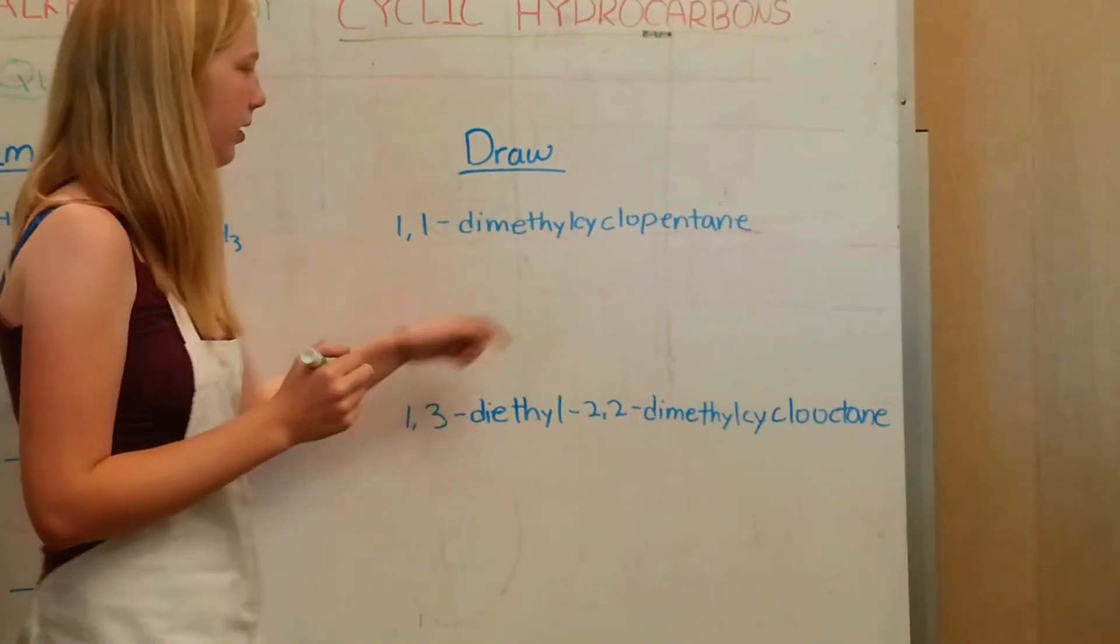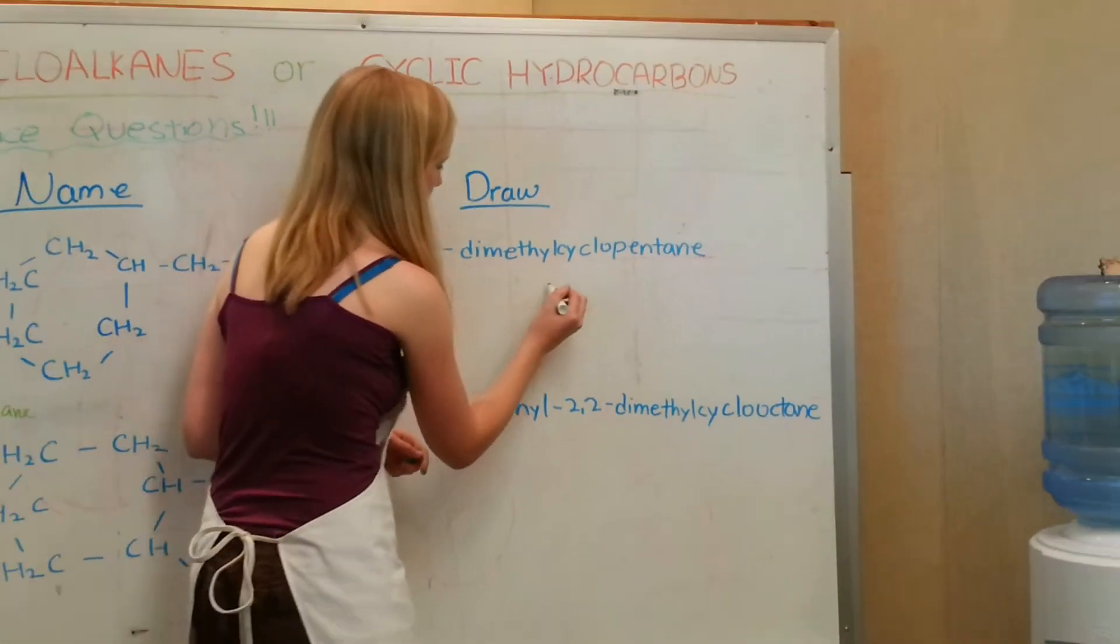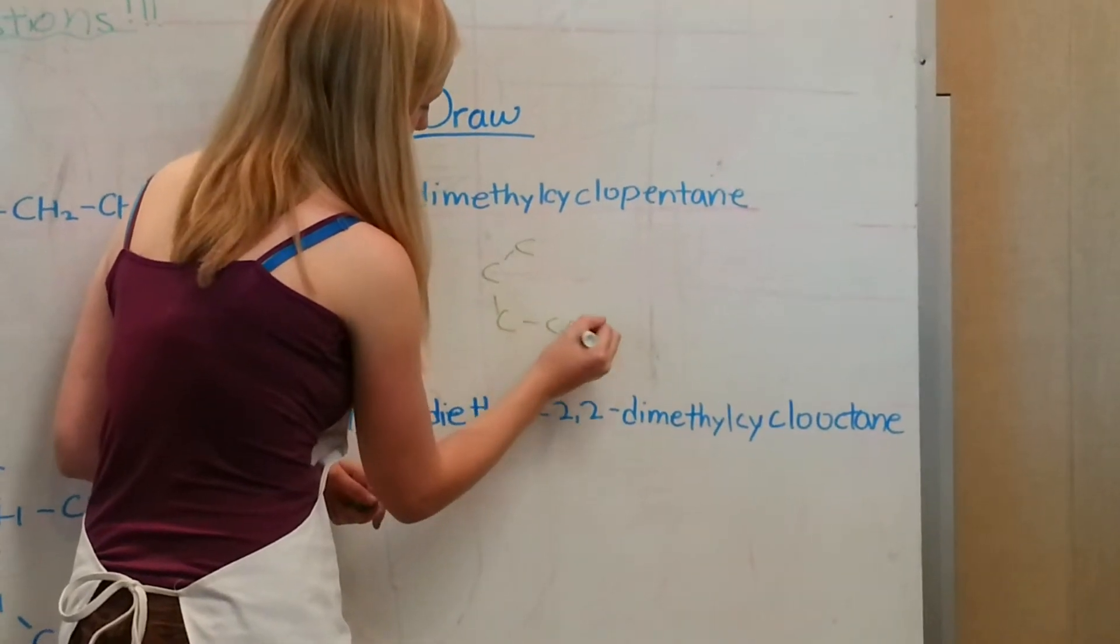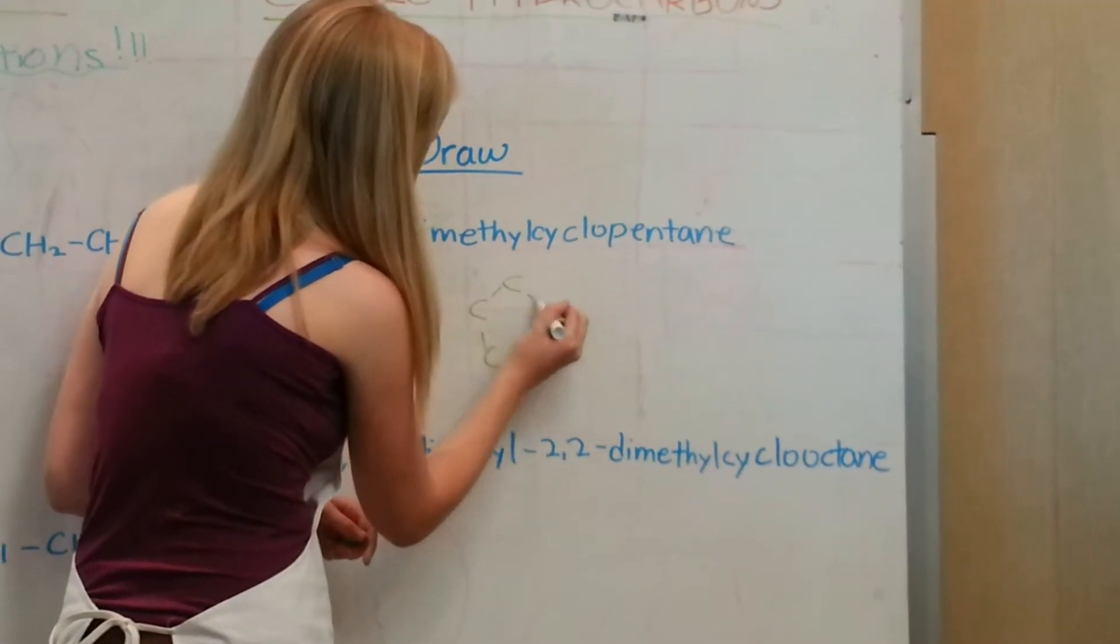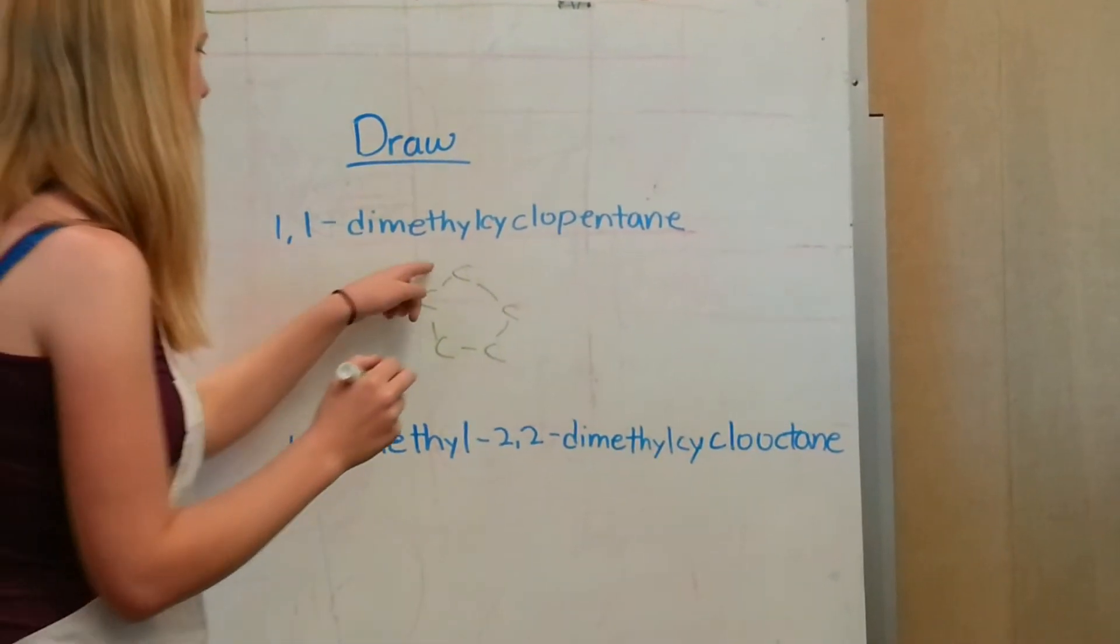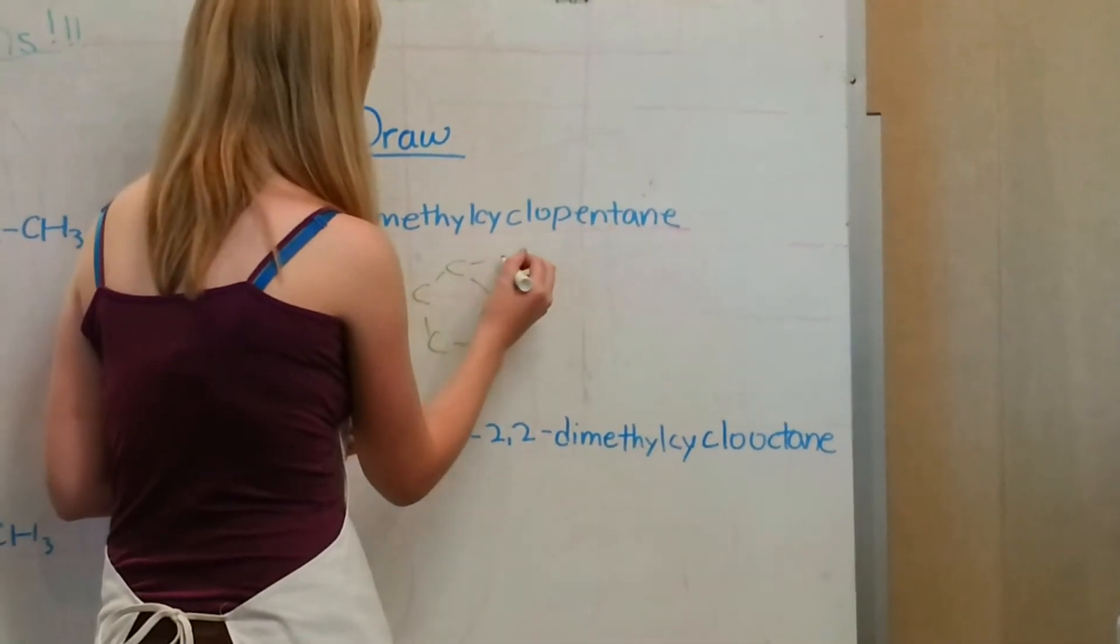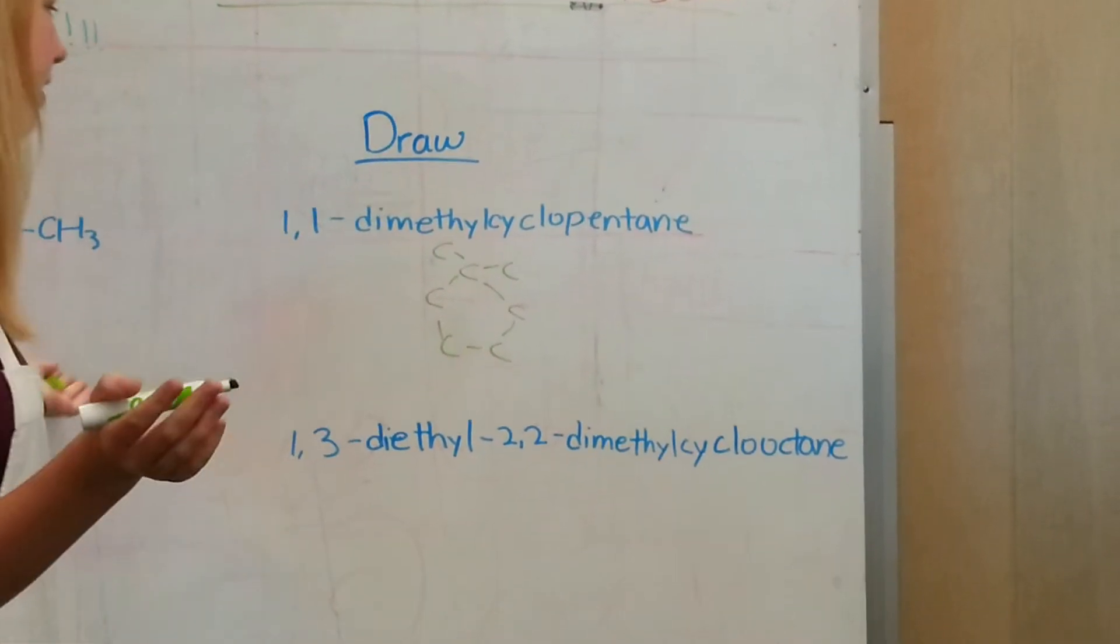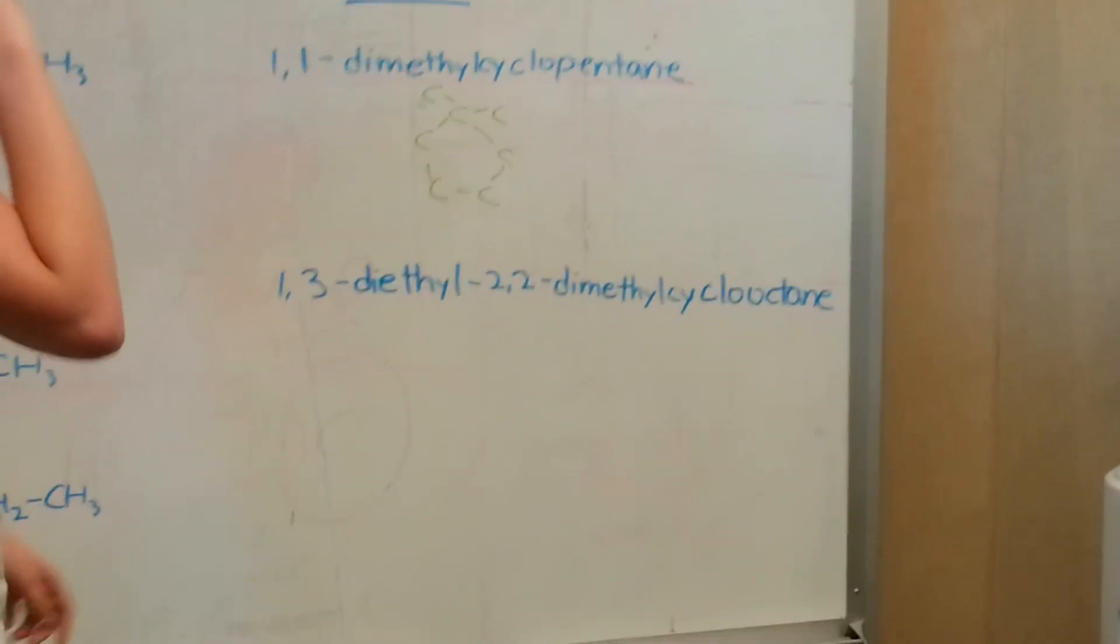And then the answer is over here. Alright, it's a cyclopentane. 2, 3, 4, 5. A little pentagon. And then on 1 there are 2 methyls. So C and C. There you go. 1,1-dimethyl-cyclopentane.